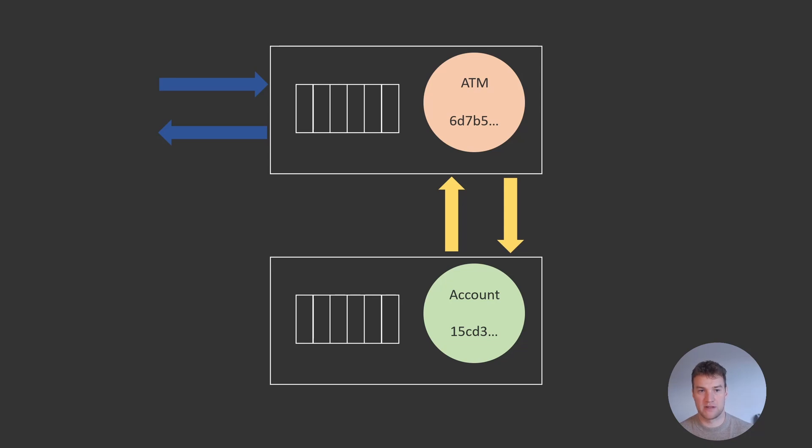One really important thing to mention when talking about grain communication is deadlocks. Deadlocks occur when one grain calls another grain that then calls back to the original grain. The original grain cannot return until it receives a response from the grain it called, but the grain it called can't respond until the original grain responds. We're essentially stuck in a circular wait scenario, and ultimately the calls will time out and fail.